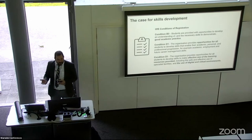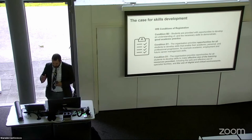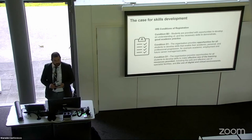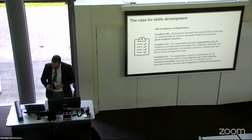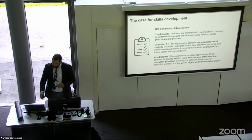Why do we need to develop skills at university level? The Office for Students has many conditions of registration. B3 is: students provided with opportunities to develop understanding and necessary skills to demonstrate good academic practice. D1 is: the organization provides opportunities for all students to develop skills that enable their academic, personal, and professional progression. And D3: the organization provides opportunities for all students to develop skills to make effective use of the learning resources provided, including the use of digital and virtual environments.